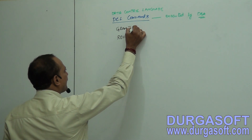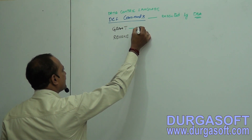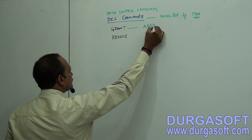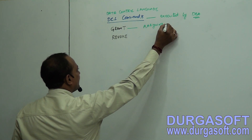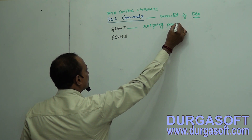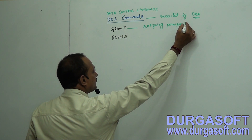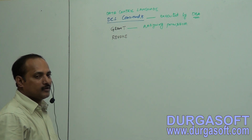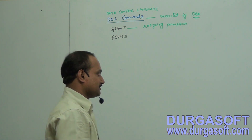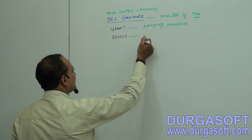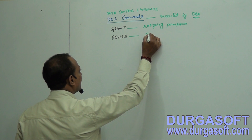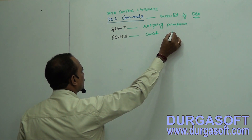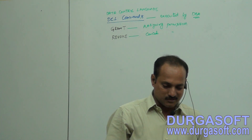If he wants to provide any permission, he can use the command GRANT — this is for assigning permission. The permissions include SELECT, UPDATE, INSERT, DELETE, TRUNCATE, and creating objects. To cancel permissions, by using the REVOKE command he can cancel permissions on the database objects from the users.